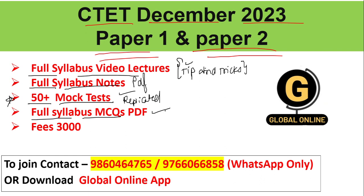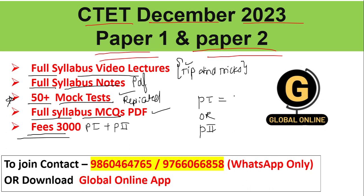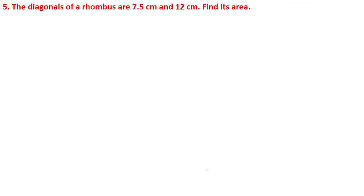The course fees for Paper 1 plus Paper 2 is 3000 rupees if you are targeting both papers. If you are targeting an individual paper — Paper 1 or Paper 2 — then the course fees is 2000 rupees each. You just have to contact us on the given WhatsApp number for enrollment, or download the Global Online application.